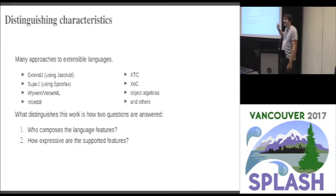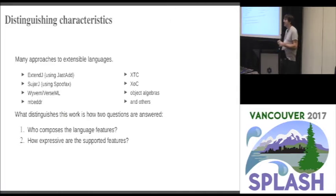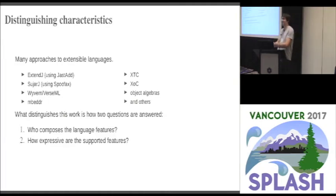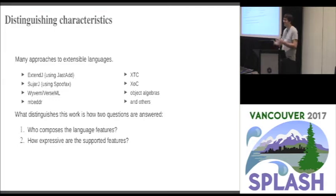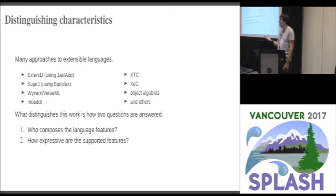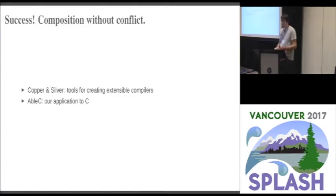There have also been other tools for building extensible C compilers, and of course there are macro systems in general. What we think really distinguishes our work is who composes the language features. Many prior systems support composable language extensions but target compiler experts — they let you compose features and create an extended compiler to give to users, because things can go wrong during composition. The second question is how expressive the supported features are. You could call Clang an extensible compiler if you're just writing new analysis passes as visitors. We want to ensure the end user composing these extensions has nothing go wrong while supporting rich, interesting extensions.